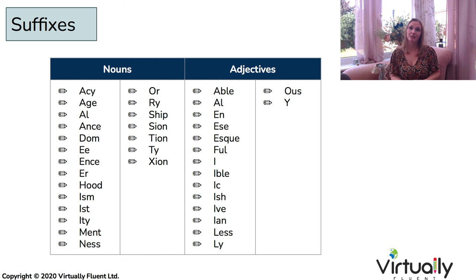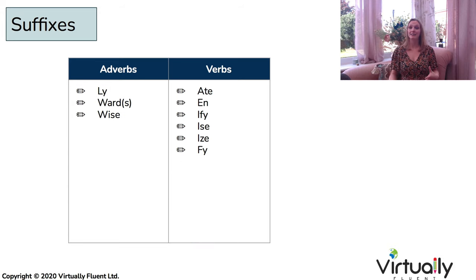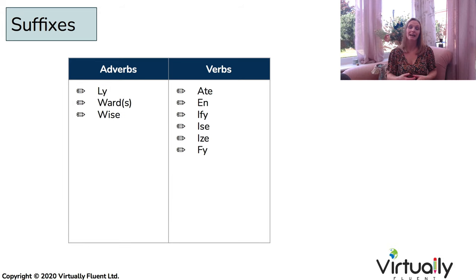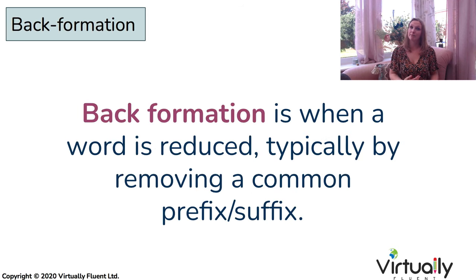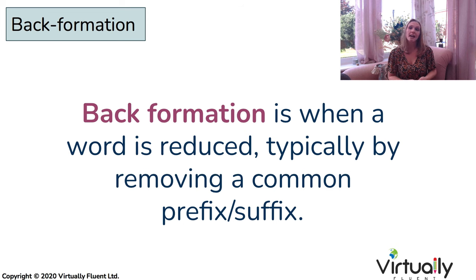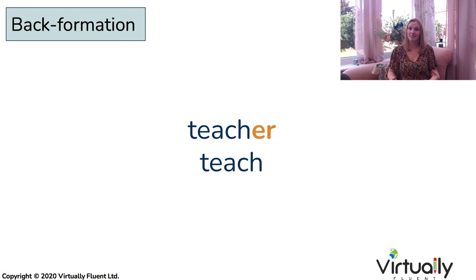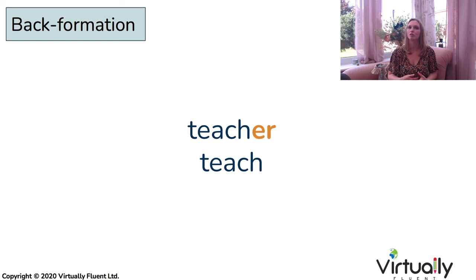So you can see we have different suffixes to actually change the type of word that we're using. You can see a list here for the nouns and the adjectives, and here for the adverbs and verbs. Again, you can find an extensive list with multiple examples in our online course. Now, back formation is simply the reverse process of adding prefixes and suffixes. We take a longer word, find prefixes or suffixes, cut those off, and return to our original root. For example, taking 'teacher' — my job — we eliminate that '-er' suffix and we end up with the root word 'teach'.